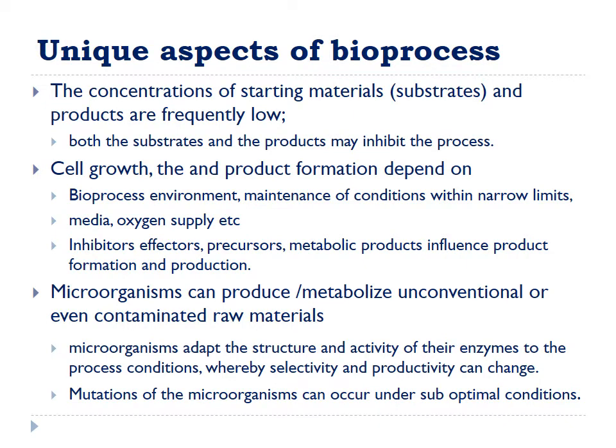Some other unique aspects of a bioprocess include the concentration of starting materials and products being usually low. The substrates and products may inhibit the production of the desired metabolite. Cell growth and product formation are dependent on the bioprocess environment. Conditions must be maintained within a narrow limit — including media, oxygen supply, inhibitors, effectors, precursors, and other metabolic products — all of which influence product formation. At times, microorganisms can produce unexpected, unconventional products due to process conditions in the bioreactor.